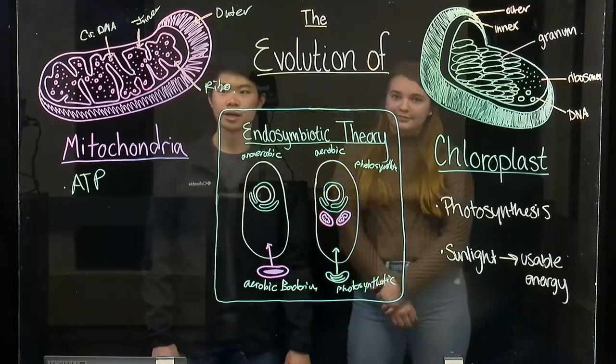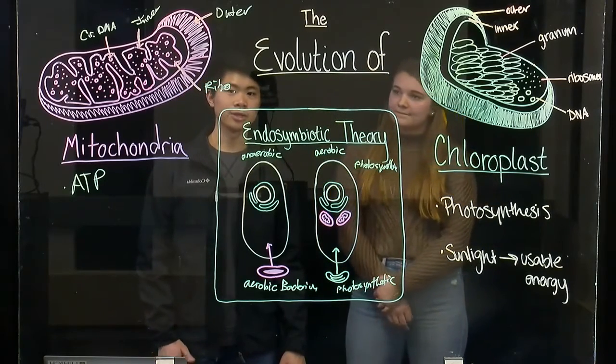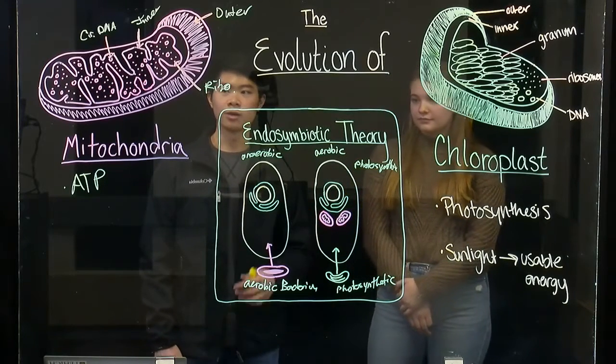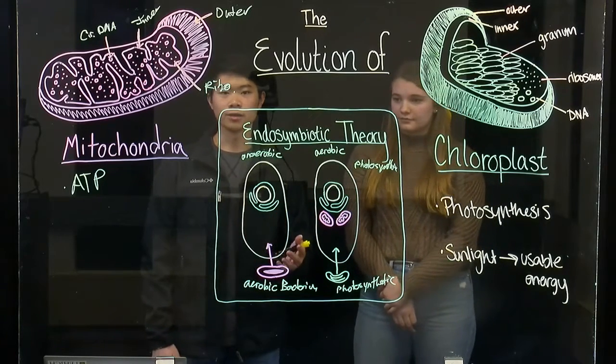To sum up, there are many similarities between prokaryotes and the mitochondria and chloroplast, and they've even evolved in such a way that one cannot function without the other.